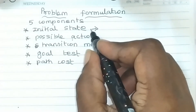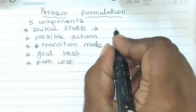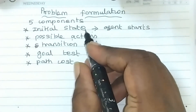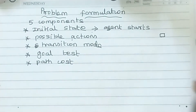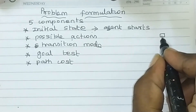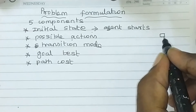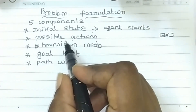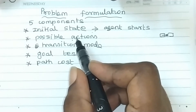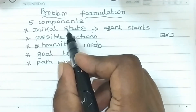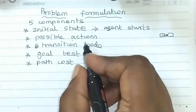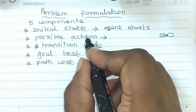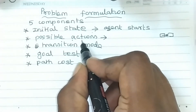The initial state is the state that the agent starts in. From that initial state, the agent has to perform some actions. When we perform some actions on that state, the state is changed from one state to another state. That is called actions.